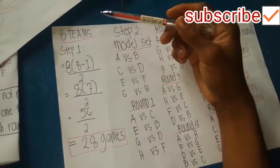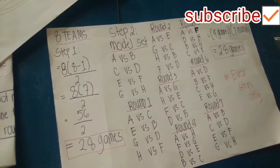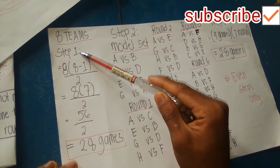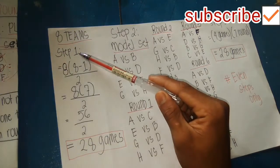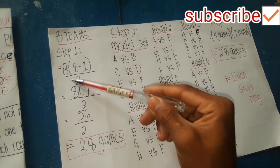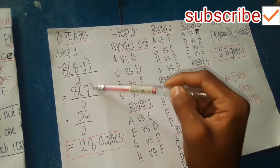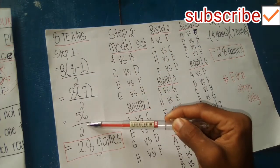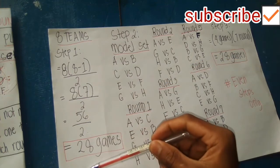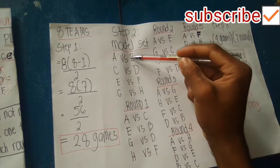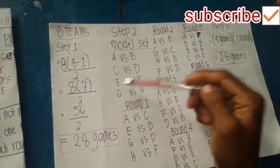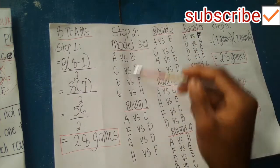Next example: eight teams. Following Step 1 with the formula, n equals 8. So: 8 times (8 minus 1) divided by 2. That is 8 times 7 equals 56, divided by 2 equals 28 games. The model set for eight teams is: A versus B, C versus D, E versus F, G versus H.